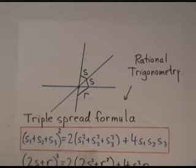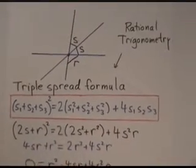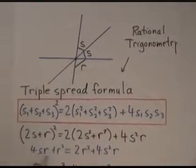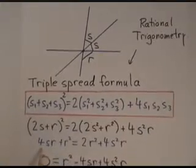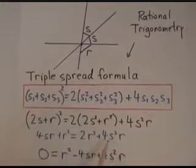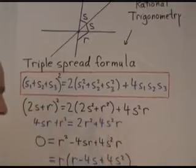So if we replace these things with s's and r's, we have 2s plus r squared on the left. Here we have 2 times 2s squared plus r squared plus 4s squared r. All right, we expand this. There's a 4s squared factor, which cancels with that one. We have 4s r plus r squared left here. On this side we have 2r squared plus 4s squared r.